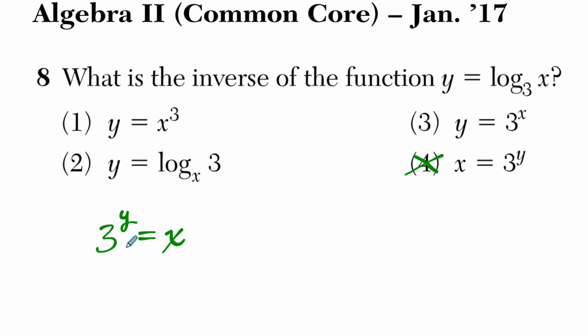This is the exponential form of the logarithmic equation you see right here, where they want the inverse of this. They want the inverse of this expression, so we swap our x and our y. That's how we get the inverse, and that's this choice right here, by swapping the x and the y.